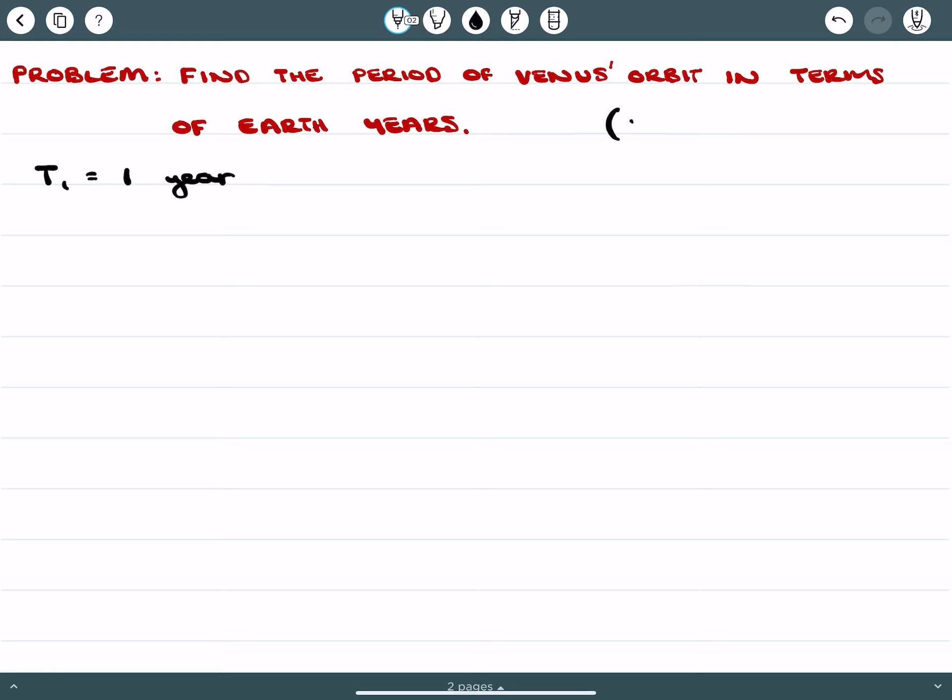We know from observation that Venus orbits the Sun in 225 Earth days, so we're trying to get an answer approximately that. The radius of Earth is 150 million kilometers or 150 times 10⁹ meters. The period of Venus is what we're finding, and the radius of Venus is 108 times 10⁹ meters from the Sun.